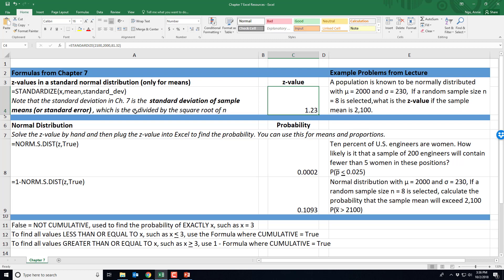If you simply plug in the standard deviation from the story without accounting for the sample size, you will get the wrong z value, which in turn will give you the wrong answer for your probability distribution.